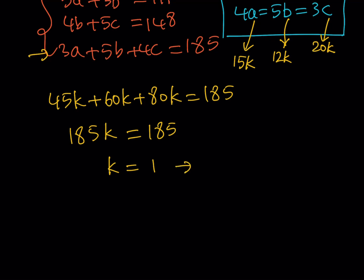And, now, from here, since I know K, I can find the value of A, B, and C separately. A is 15K. So, A would be 15. B would be 12. And, C would be 20. Right? Awesome.